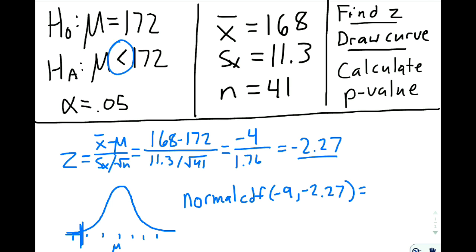And when we type that into our calculator, we will get, hold the suspense, 0.012 if we round it off. 0.012, that is our p-value.